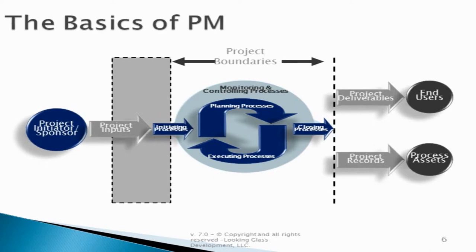In closing, you will end up with two specific outputs. First and most importantly, you have the project deliverables — the products, services, and results for which the project was originally undertaken. Additionally, you're going to have your project records or process assets: the informational elements that hopefully the team consistently reviews so that over time we can get better and better at the execution of our projects.